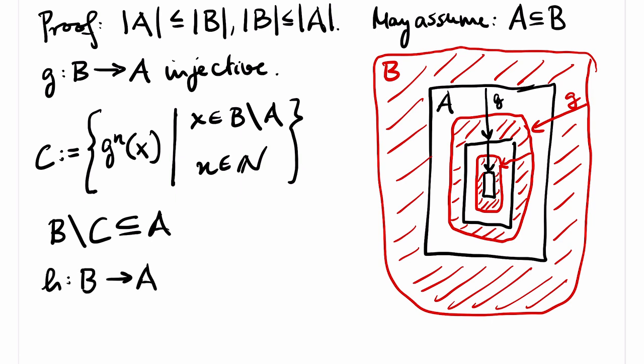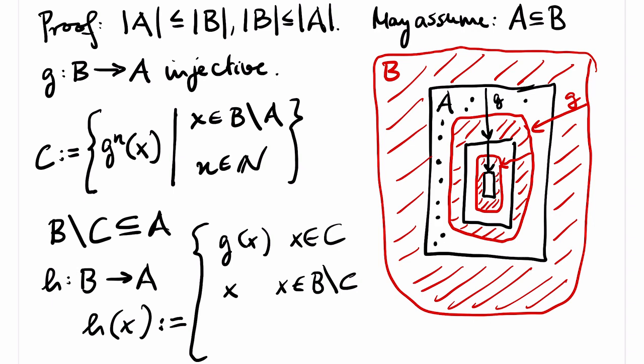Now we can define the bijection from B to A as follows. H of X is defined to be G of X if X is an element of C, and otherwise, H of X equals X. That's it. So the idea is that if you are in the red area, you walk along G, and if you are in the black area, you stay, you stand. Surjectivity of this map is clear from the picture. Every point in A is either in the red area, and therefore has a pre-image, or in the black area, and then of course also has a pre-image. And the map H is also injective. The pre-image of a point X in the black area consists of just X. And the pre-image of a point in the red area consists of one point by the injectivity of G.